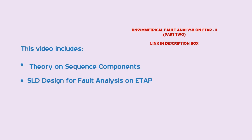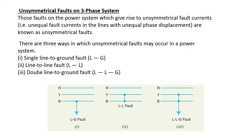Unsymmetrical faults on three phase system. Those faults on the power system which give rise to unsymmetrical fault currents — that is, unequal fault currents in the lines with unequal phase displacement — are known as unsymmetrical faults. There are three ways in which unsymmetrical faults may occur in a power system.